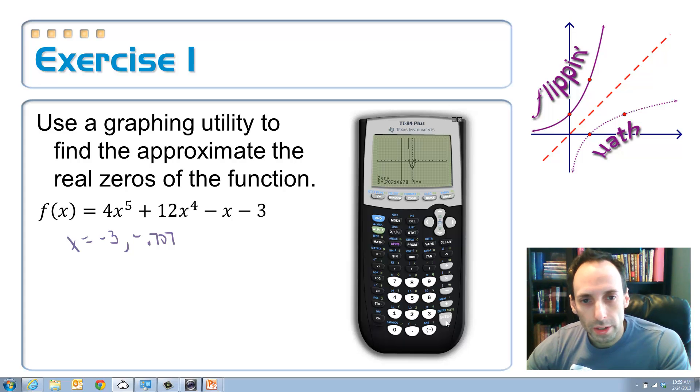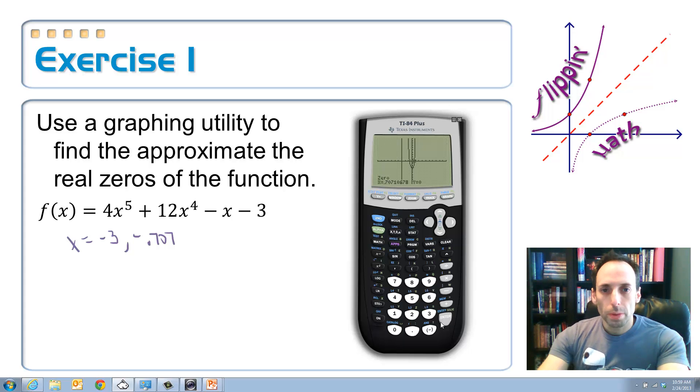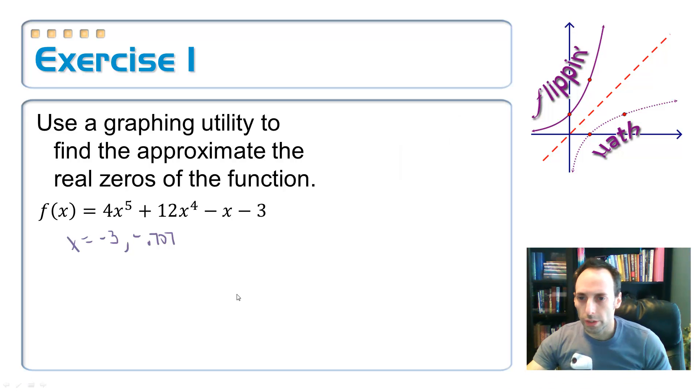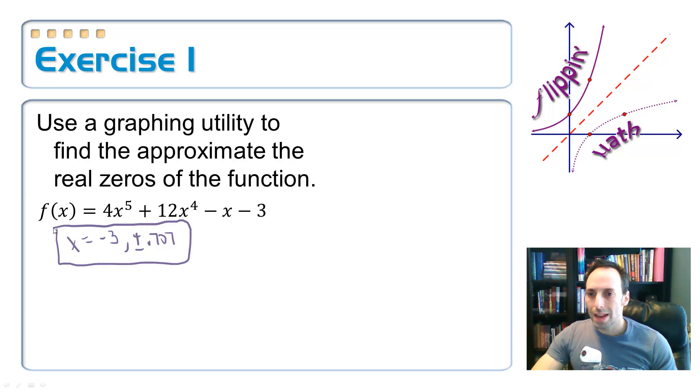And, oh, look at that. It's the same value as before, only positive. Okay. So, I'm going to just make this plus or minus 0.707. So, here are my approximate zeros, my approximate x-intercepts. And there's three of them here. Wait a minute. This degree is 5.